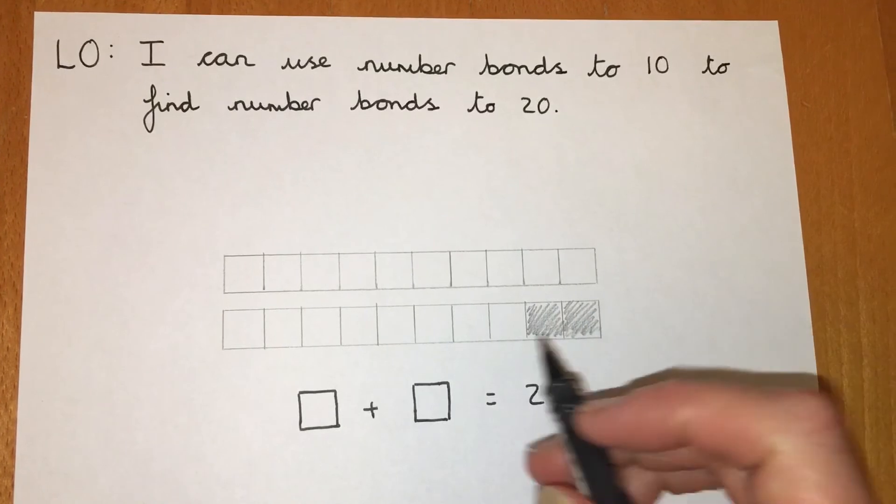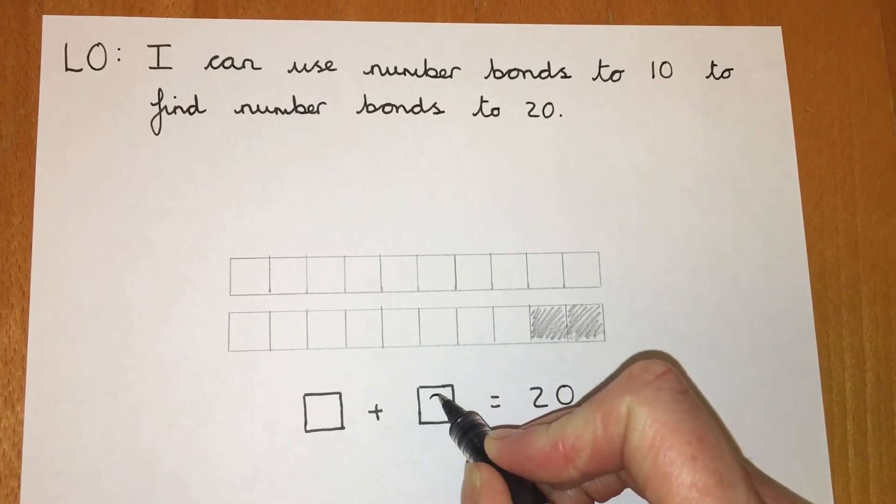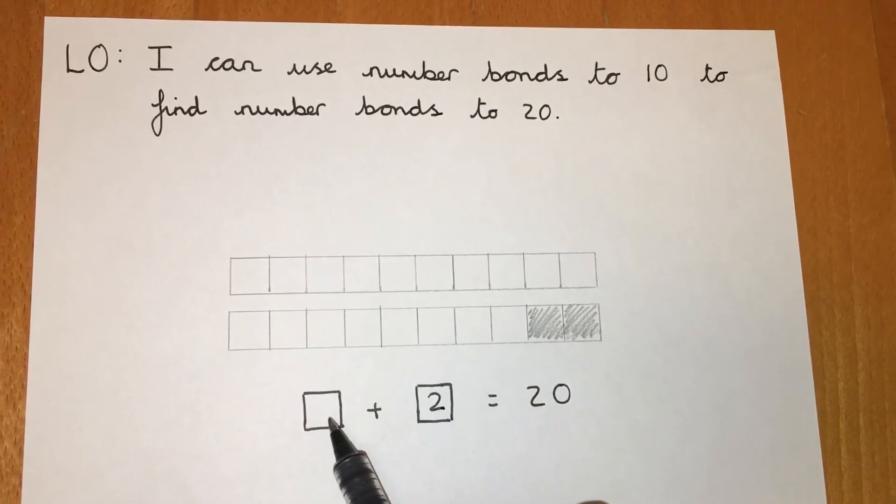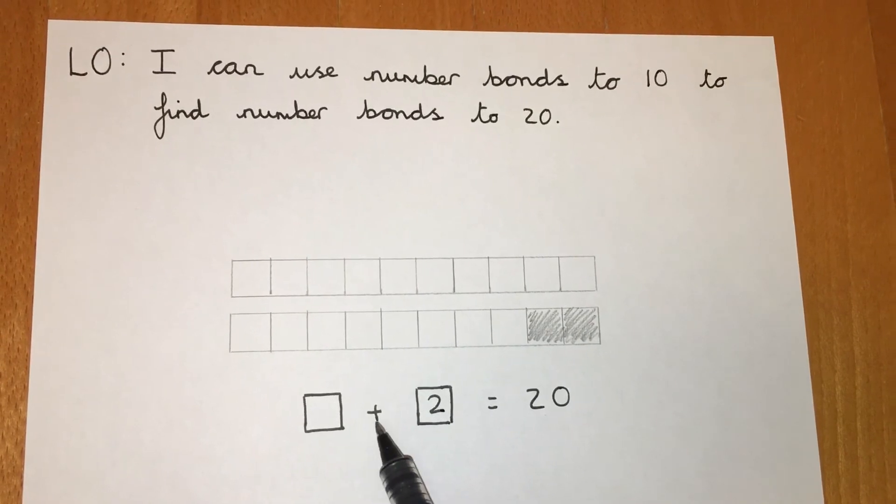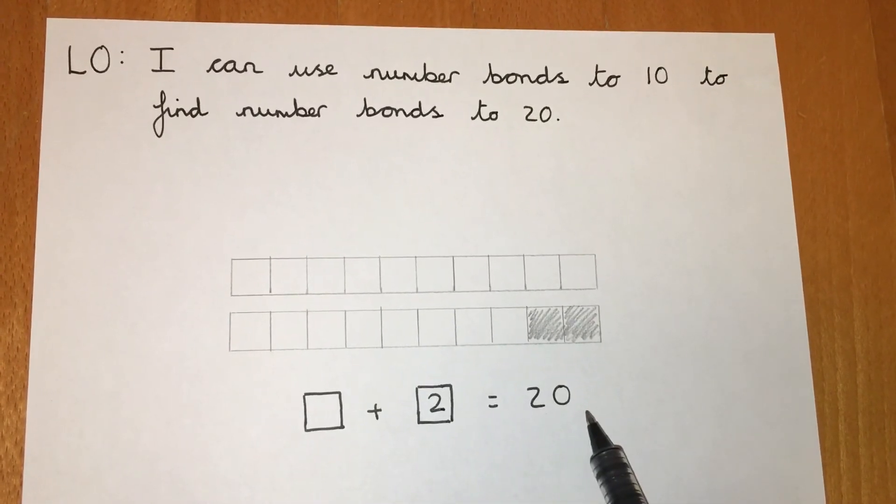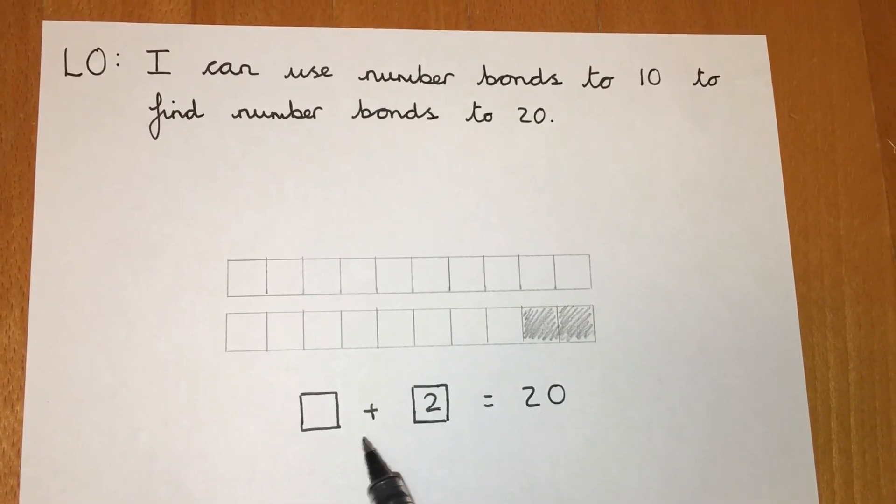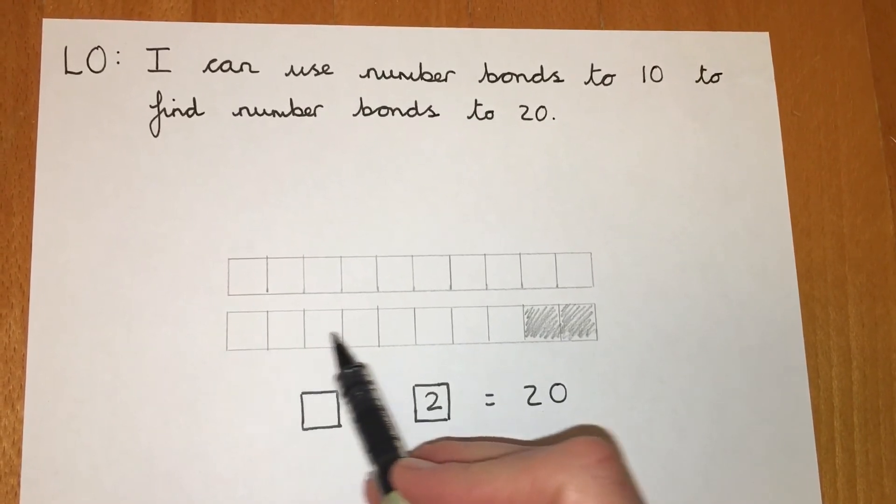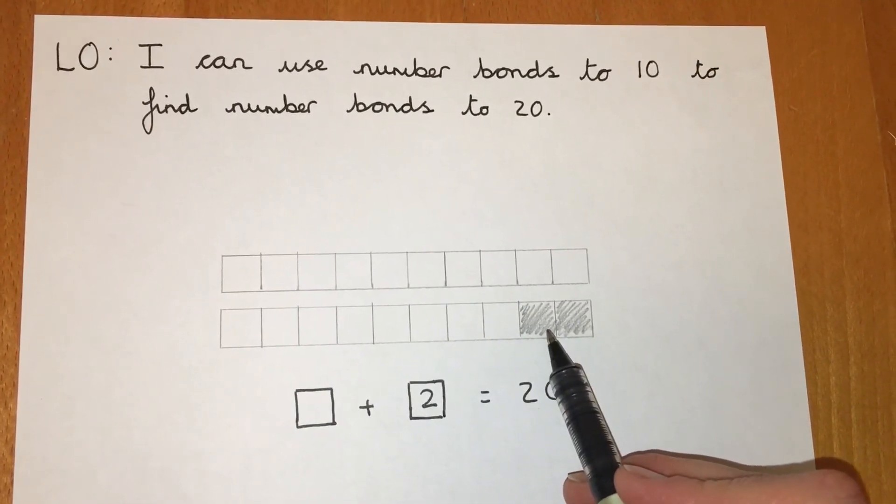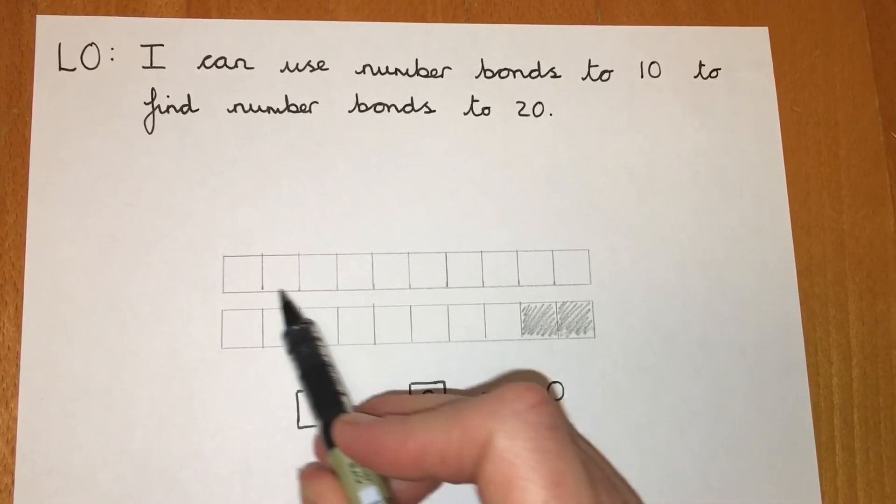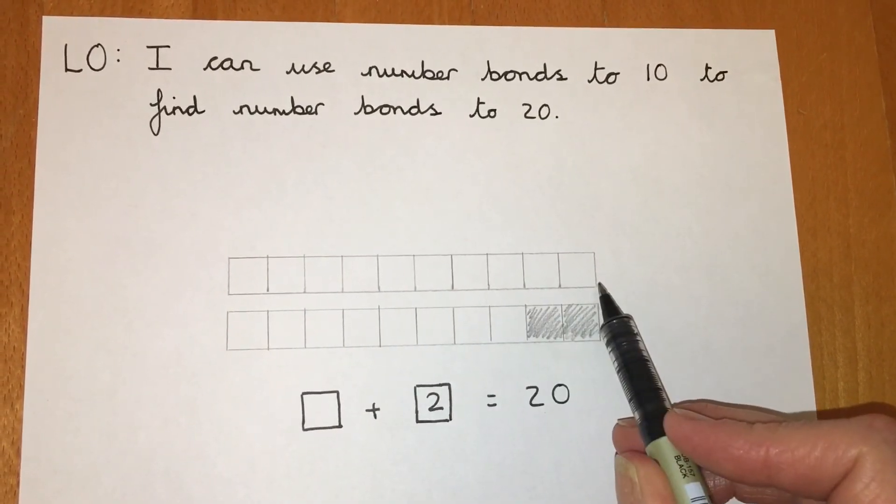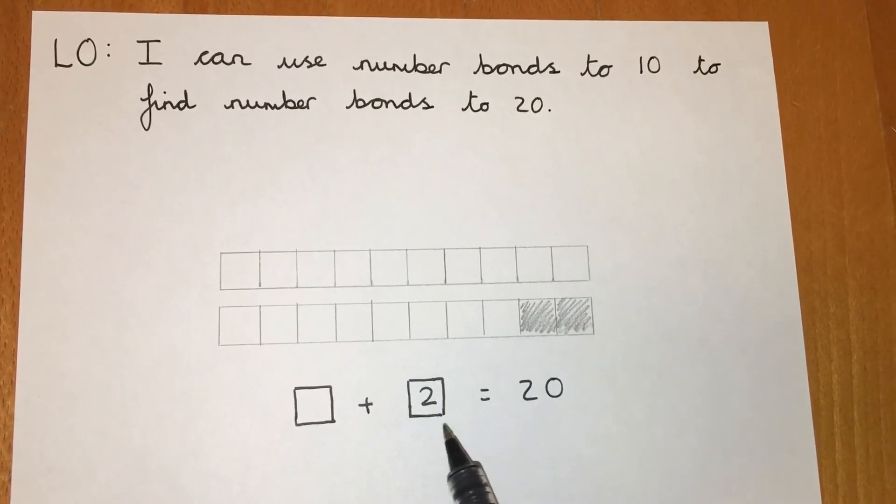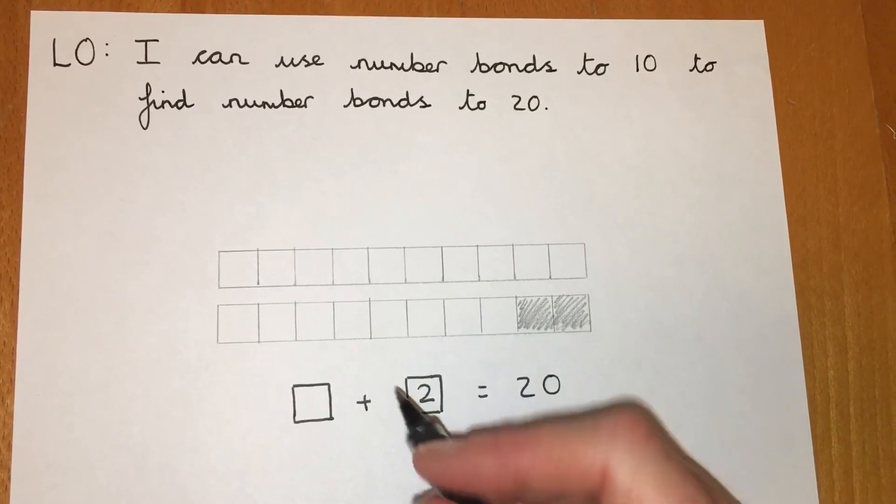Now we've got 2 shaded, so we're going to put that in here. OK, now we just need to know what this number is. Something plus 2 equals 20. Well, first of all, what plus 2 equals 10? Well, it's 8, isn't it? So this must be 8 and 10 more, which is 18 plus 2 equals 20.